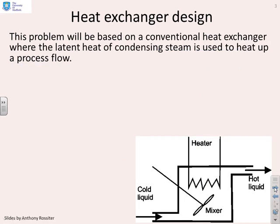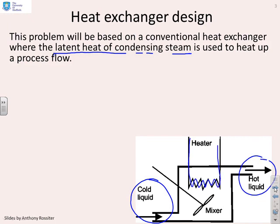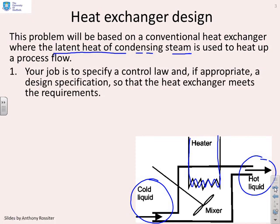What we want to do is design a control law to make sure this heat exchanger operates as desired. This particular heat exchanger uses the latent heat of condensing steam to heat up a process flow. You'll see we've got a flow coming in here that's cold at one end and it goes out at the other end as hot. This cycle here represents the steam coming in, condensing, and the heat from condensing steam heats up the flow. We want to specify a control law and if appropriate a change in the design so that the heat exchanger meets some specific requirements.